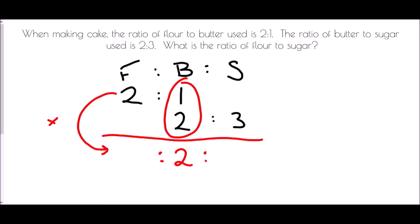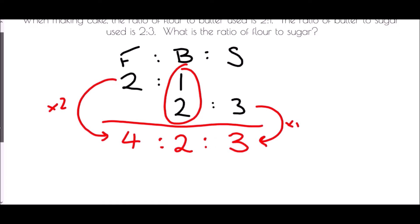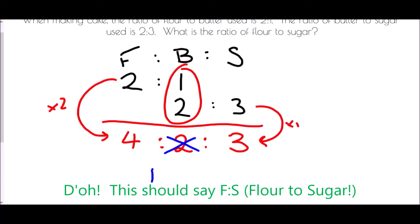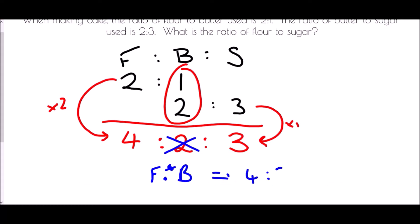I have doubled that first ratio, and therefore the flour is going to become 4. In the second ratio, what did I do to turn 2 into 2? I actually didn't do anything — it was just multiplied by 1, and therefore I will also do that with the 3. It will become 4 to 2 to 3. But the question asked what is the ratio of flour to sugar, so we can ignore the butter. The ratio of flour to sugar is 4 to 3.